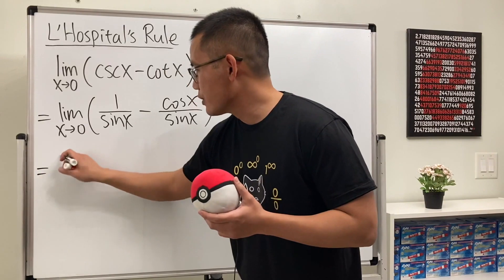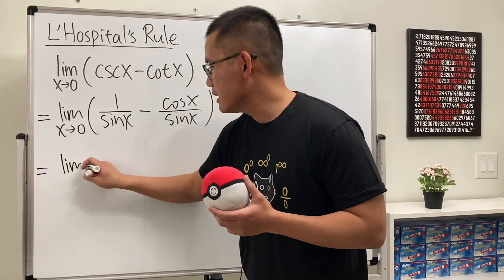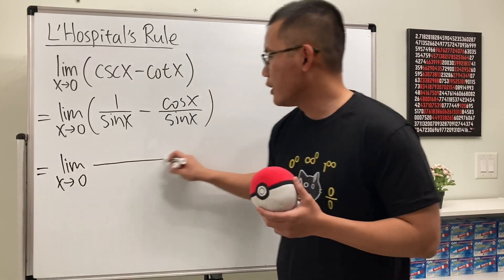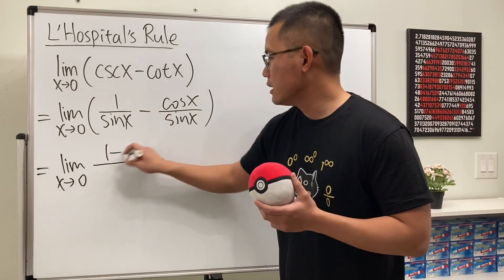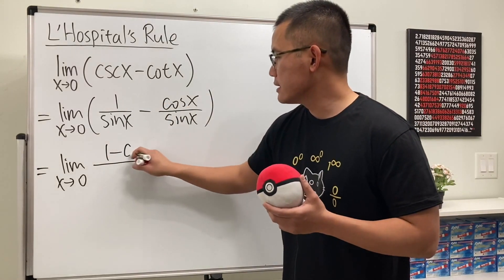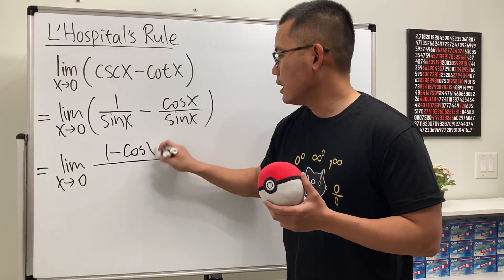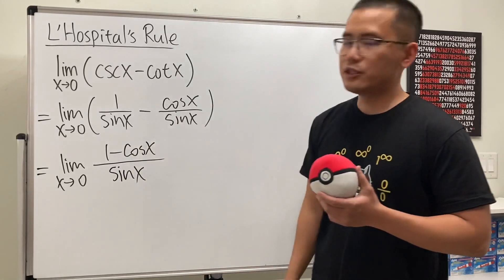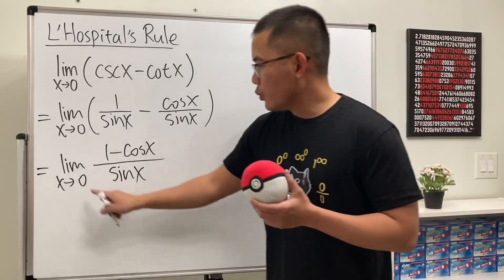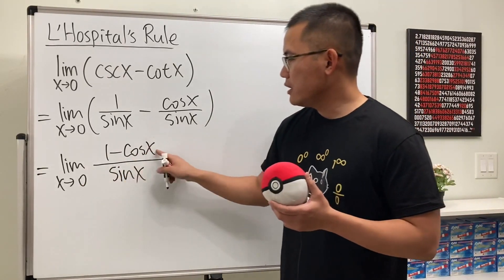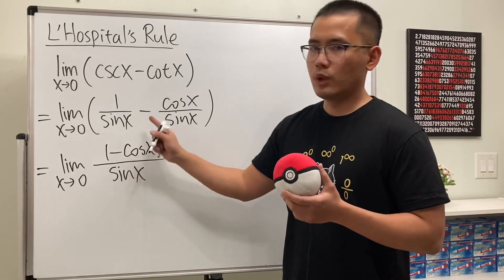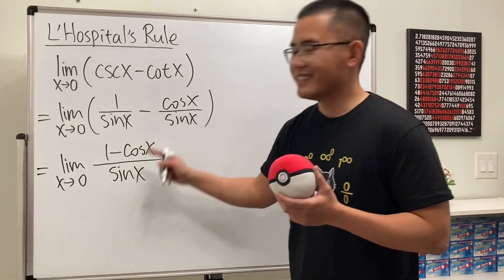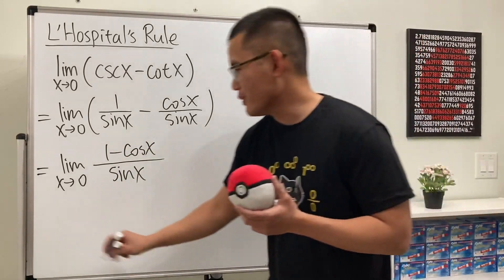So this is going to be the limit as x approaching 0 of (1 minus cosine x) over sin x. When we put 0 in here, cosine 0 is 1, so 1 minus 1 is 0. And sine 0 is 0. So we have 0 over 0 — L'Hôpital's rule.